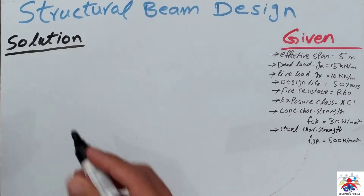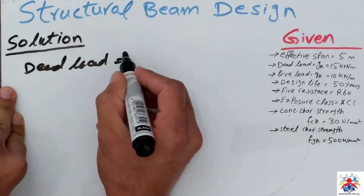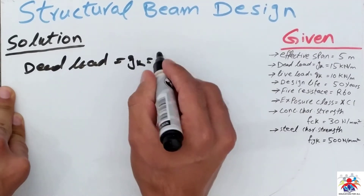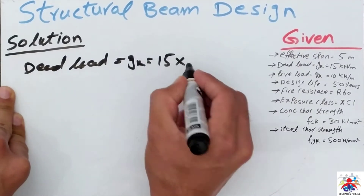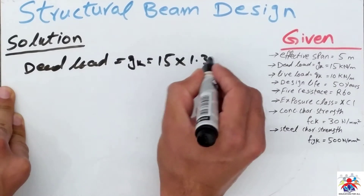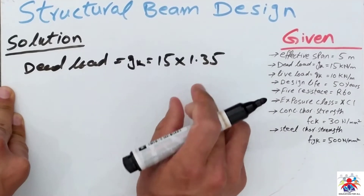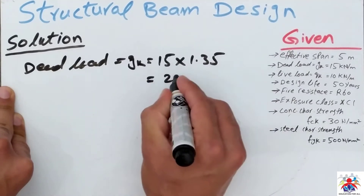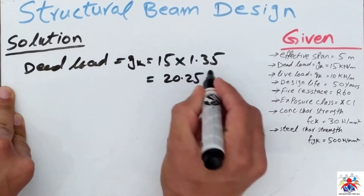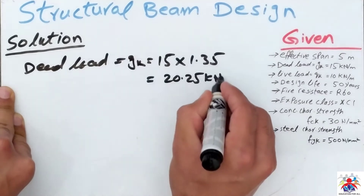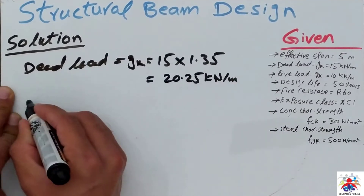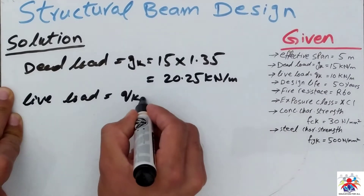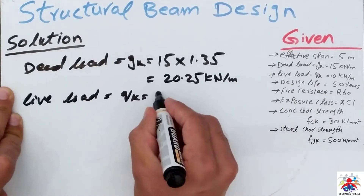First of all we calculate the factored dead load. Gk is 15 kilonewtons multiplied by 1.35 — this is the dead load factor which we must use while designing the beam — so the answer would be 20.25 kilonewtons per meter.